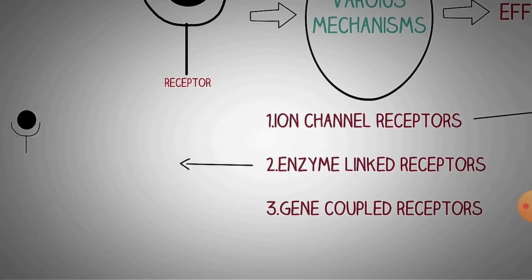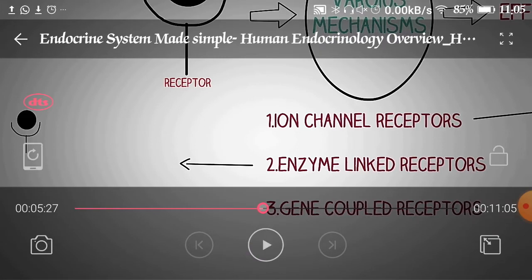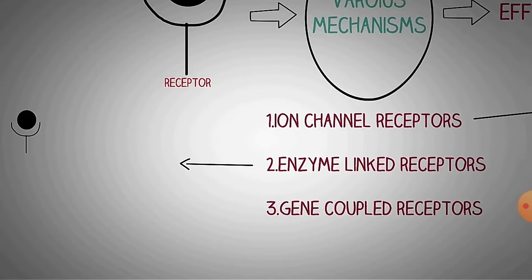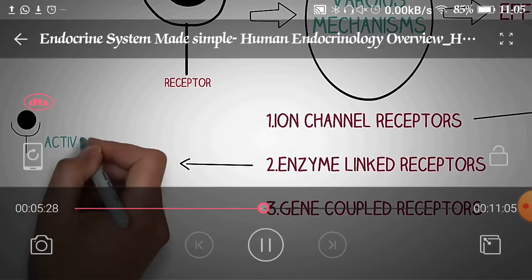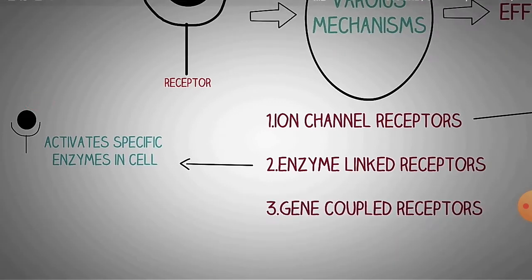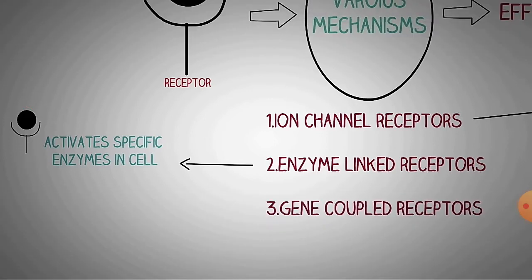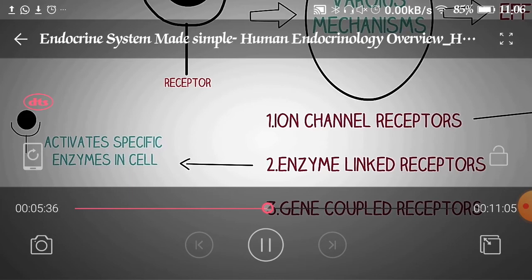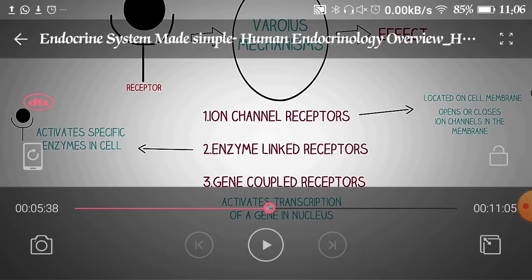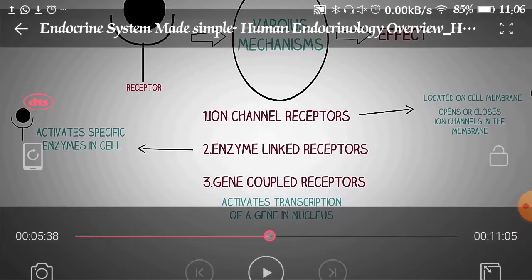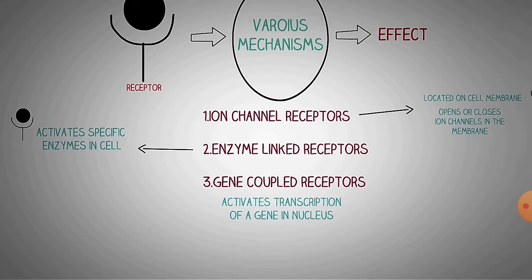For the enzyme-linked receptor, insulin is a key example. Insulin works specifically through this enzyme-linked receptor. In this mechanism, there is activation of enzymes — for example, tyrosine kinase enzyme is activated. Due to that activation, the G-protein coupled receptor activates and begins to form protein. Complex formation occurs after the enzyme-linked receptor with the tyrosine kinase receptor, and finally protein synthesis occurs, which is responsible for production and release of insulin.